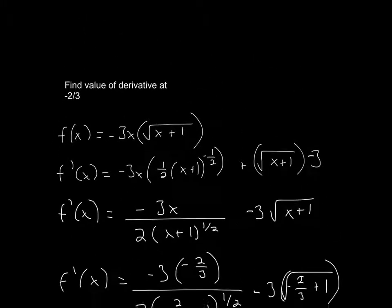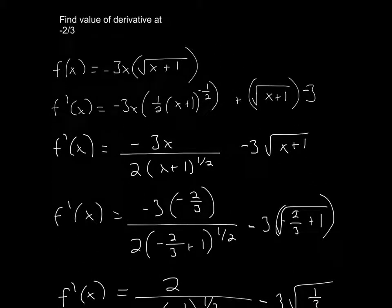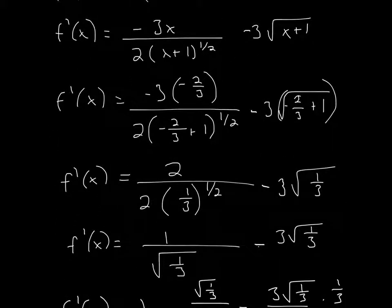So the actual question asked us to find the value at negative 2 over 3. So all I'm doing is going to plug in negative 2 over 3. So here, all I did was plug in negative 2 over 3 every place I saw an x. And then I just simplify, negative 3, cross-multiply with 3 over here, just cancels out. The negatives cancel out to make it positive.